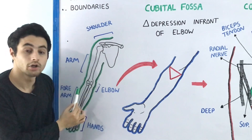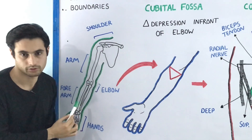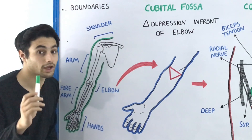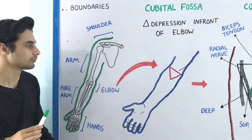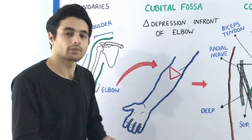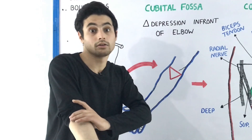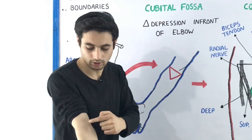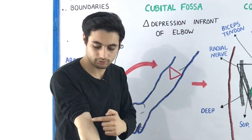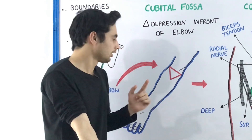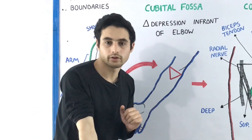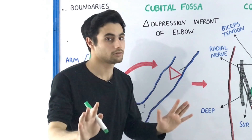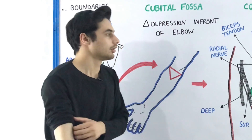The elbow is connecting your arm with the forearm. In front of this elbow you have a triangular depression, and this triangular depression is known as the cubital fossa. Fold up your sleeves and look for yourself — in front of your elbow joint you have this triangular depression. The contents and boundaries of the cubital fossa are very important clinically.